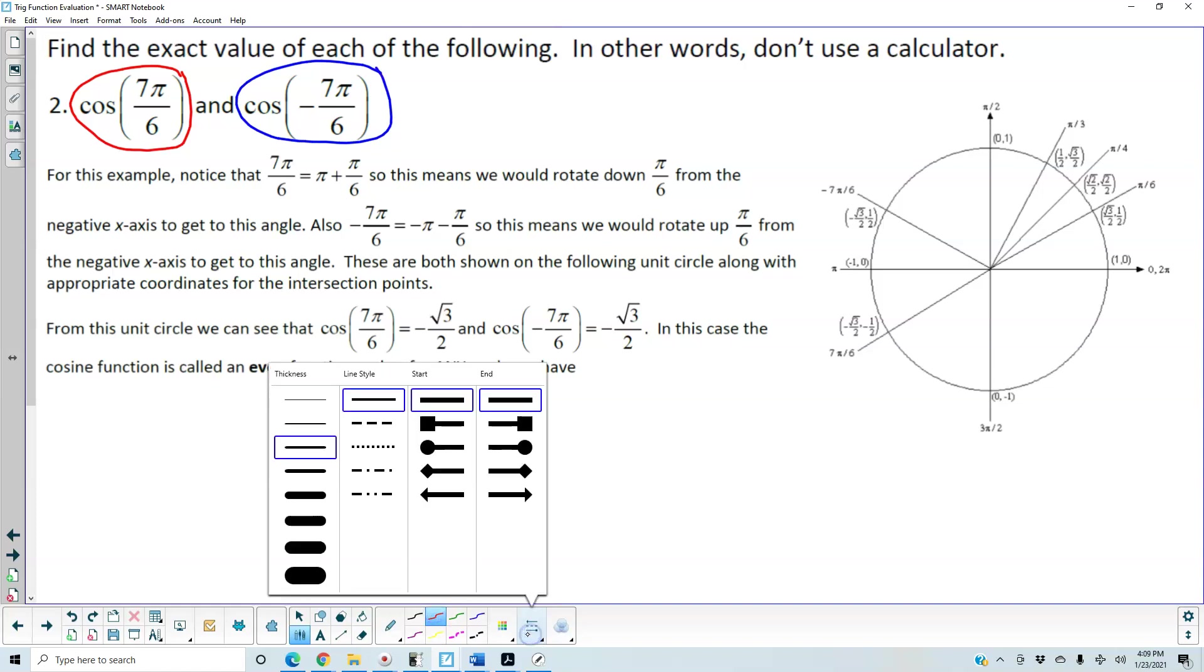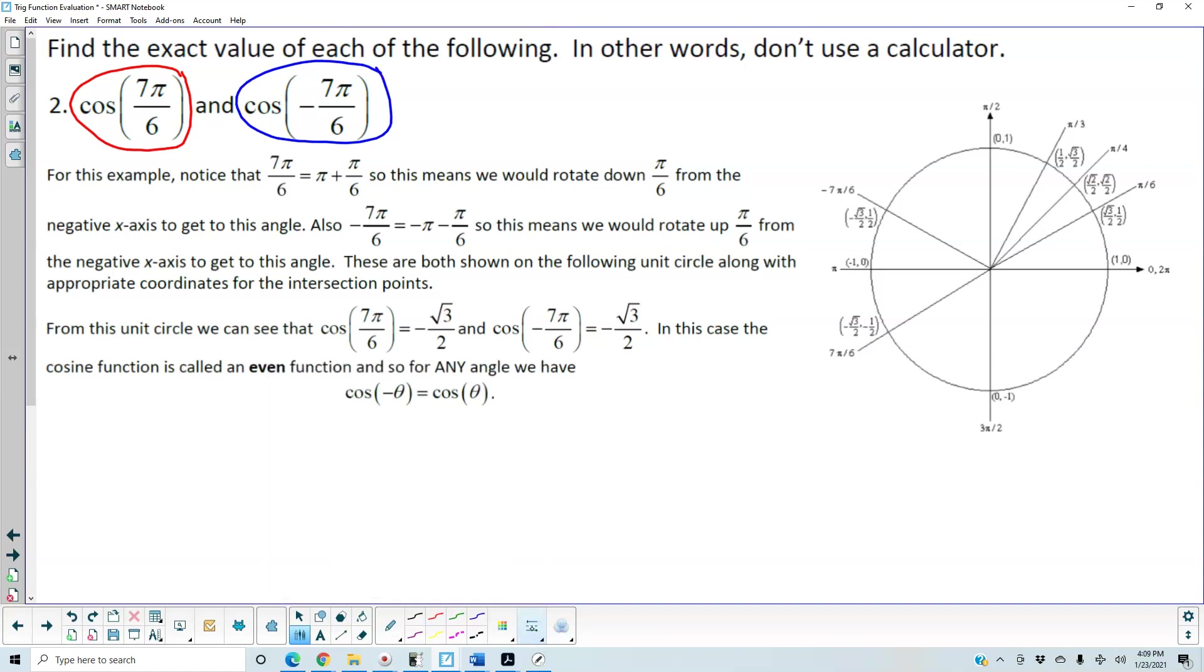So let's take a look at the first one. Notice that 7π over 6 is the same thing as 6π over 6 plus π over 6, which gives us π plus π over 6.